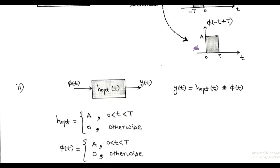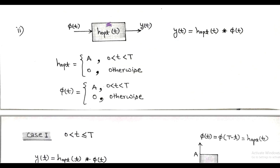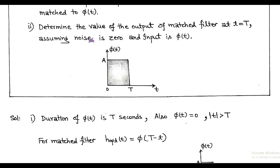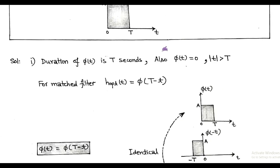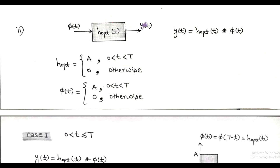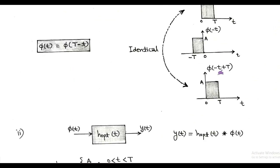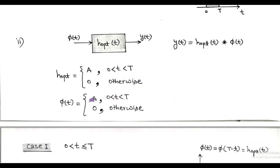For the second part, we determine the output of the matched filter at t equals capital T, assuming noise is zero and input is φ(t). We consider an optimum filter with impulse response h(t) and input φ(t). The output of the optimum filter is the convolution of the input signal and the impulse response, so y(t) = h(t) ∗ φ(t). The optimum impulse response h(t) has value a between zero and capital T, and zero otherwise, making it identical to the input signal φ(t).